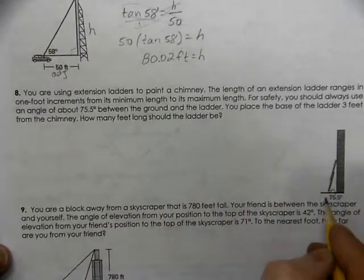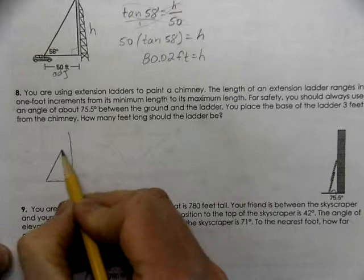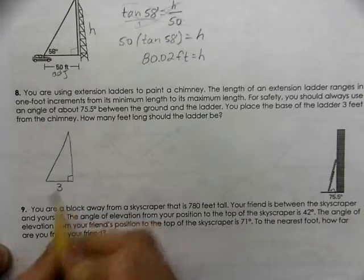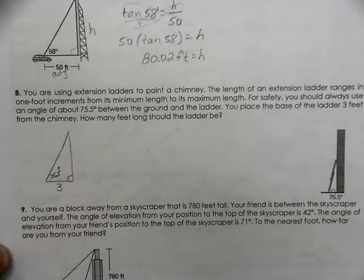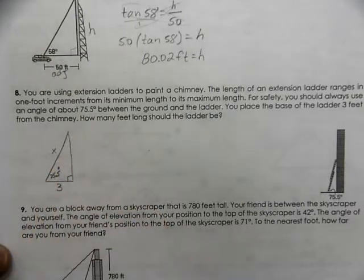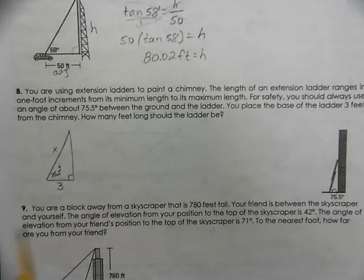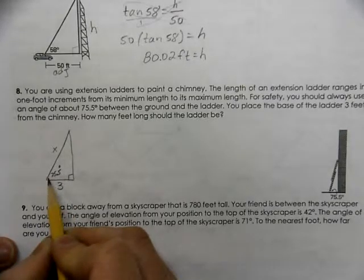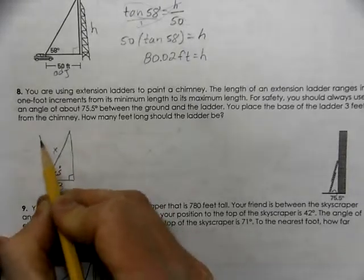So, we know that we have this triangle. And we're 3 feet from the wall, from the chimney. We've got 75.5 degrees. And the question is, how long is the ladder? So, you've got to understand what the question is before you can ever answer it. You've got to know where the information is that you're working with. So, from the 75 degree point of view, 3 is adjacent and the x is the hypotenuse.